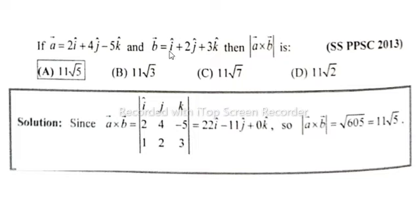minus 5k and b is equal to i plus 2j plus 3k then absolute of a cross b is